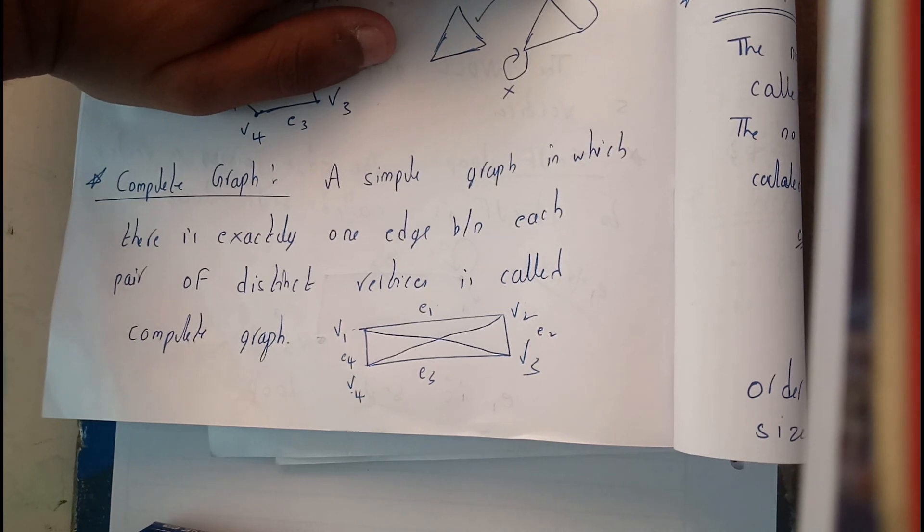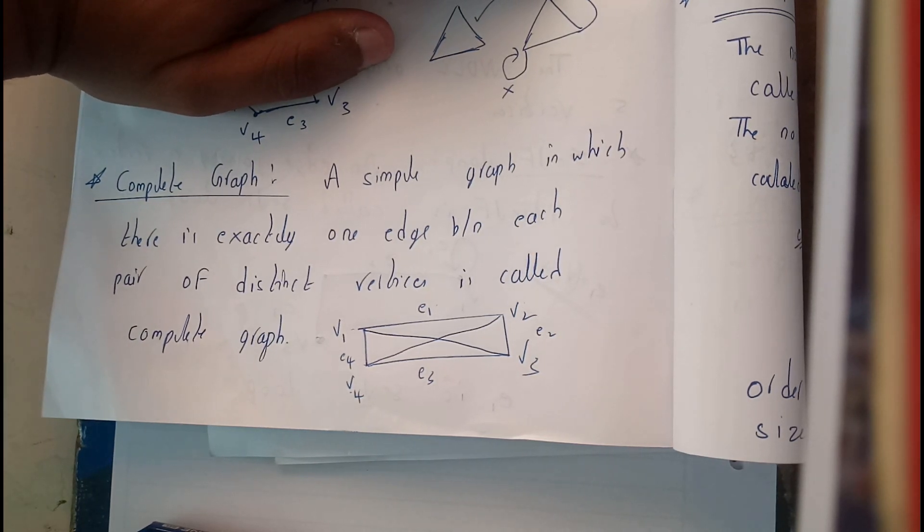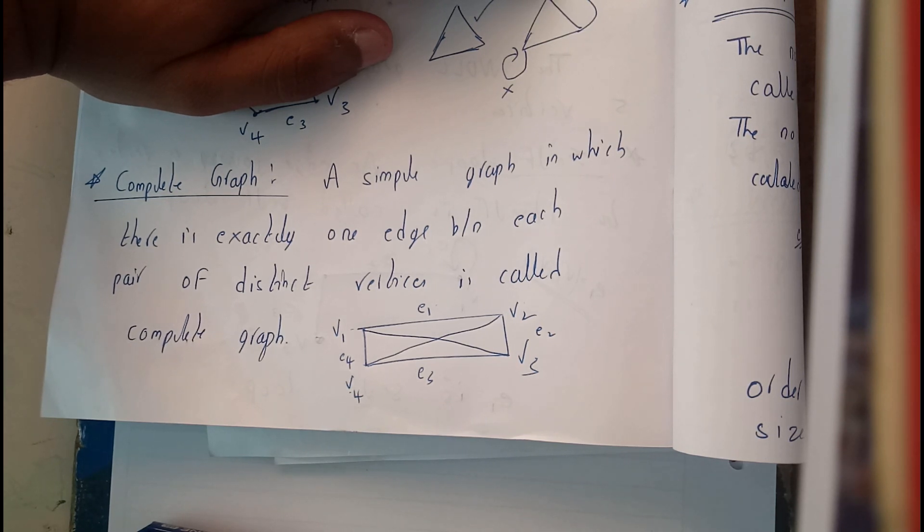Hello guys, in this tutorial let's see what is a complete graph. A complete graph is a simple graph in which there are all the possible combinations of every edge between every vertices.